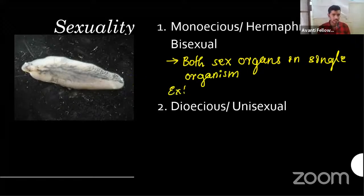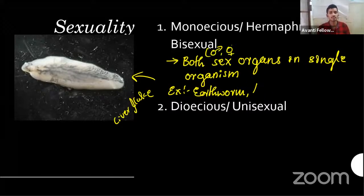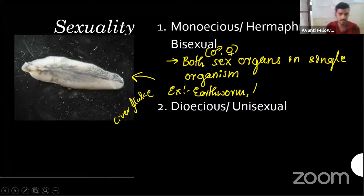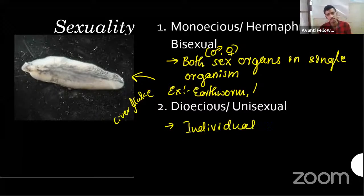Examples of hermaphrodites: liver fluke, earthworm — organisms that have both male and female sex organs within a single organism. They may go for self-fertilization or cross-fertilization. Sponges — spongilla — and half the members of Porifera are monoecious. What is dioecious? Dioecious means an individual organism has any one sex organ.